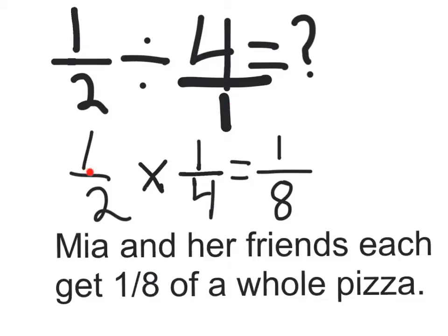So, one half times one fourth equals one eighth. This is because one times one is one, and two times four is eight. So, Mia and her friends each get one eighth of a whole pizza.